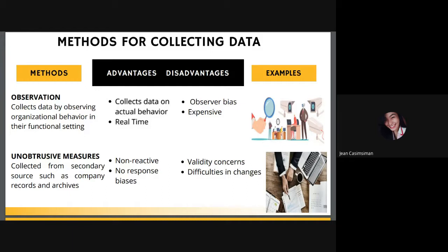The fourth method is unobtrusive measures. 'Unobtrusive' means not attracting attention or not easily noticed. This measure is collected from secondary sources such as company records and archives. The advantage is that it is non-reactive because the people being studied are not aware of it, and there is no response bias since respondents are not asked to stop what they are doing. The disadvantage is validity concerns — company records may not include all usable data — and difficulties in interpreting changes in recording methods versus actual changes in the organization.